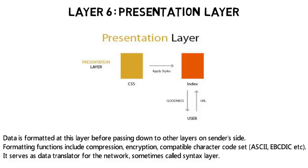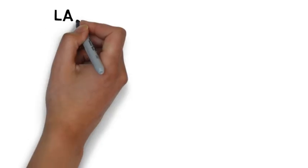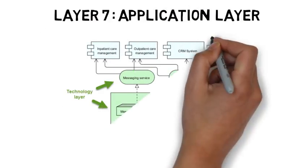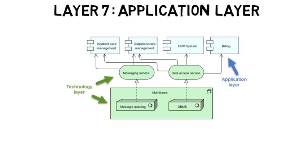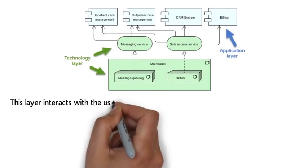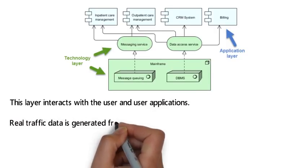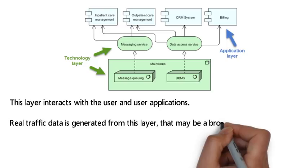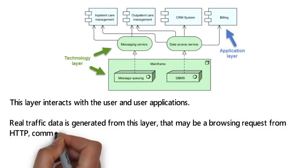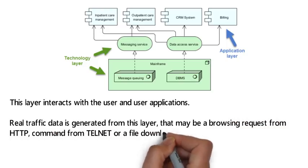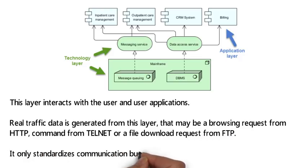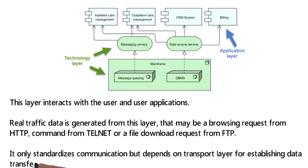Layer 7, the last layer, is the Application Layer. This layer interacts with the user and uses applications. Real traffic data is generated from this layer — that may be a browsing request from HTTP, a command from Telnet, or a file download request from FTP (File Transfer Protocol). It only standardizes communication but depends on the transport layer for establishing data transfer channels.